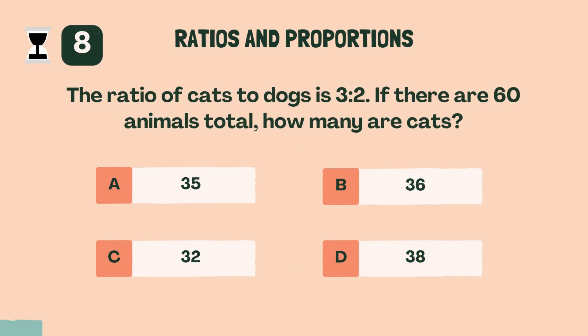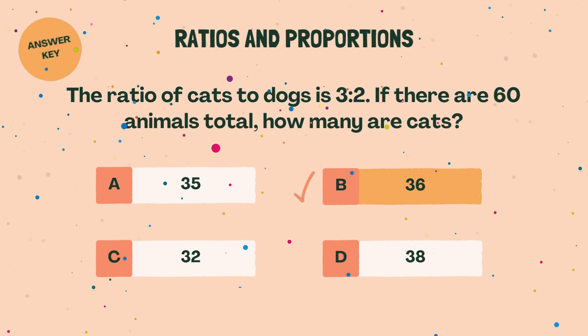The ratio of cats to dogs is 3 to 2. If there are 60 animals total, how many are cats? B, 36.